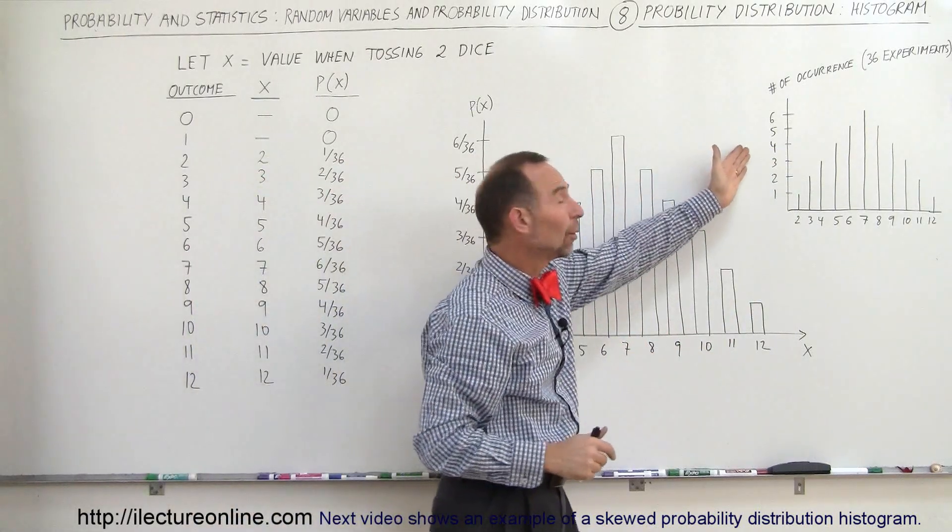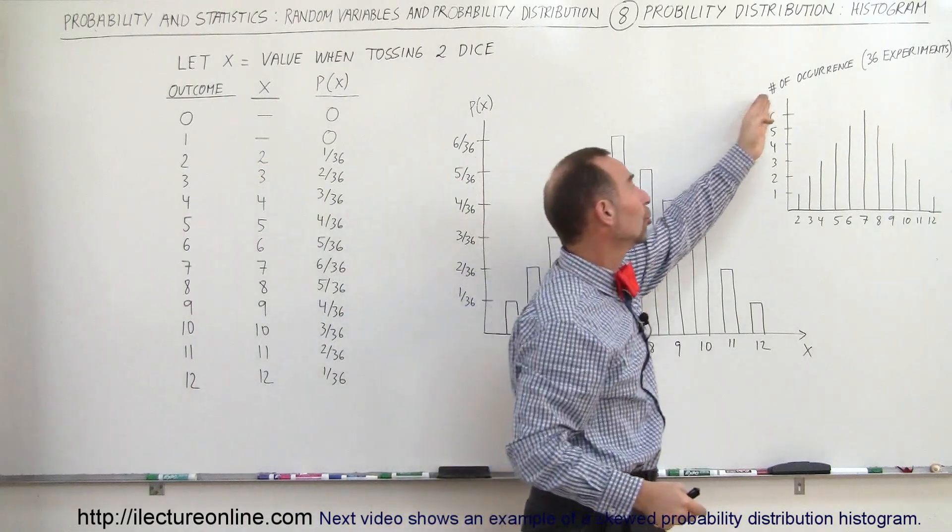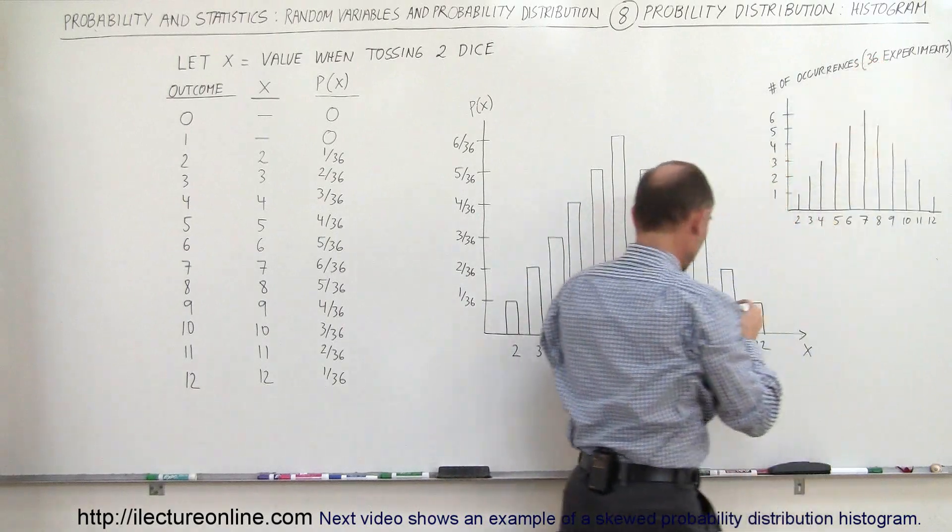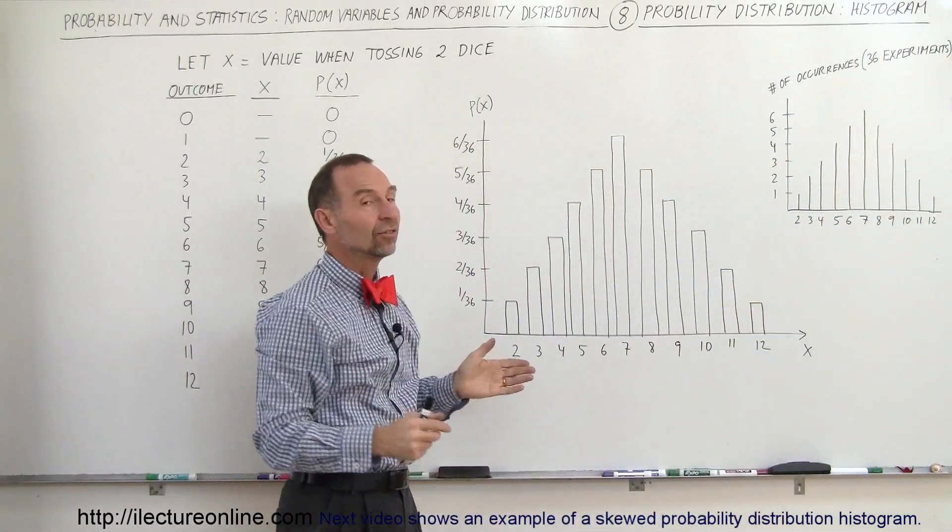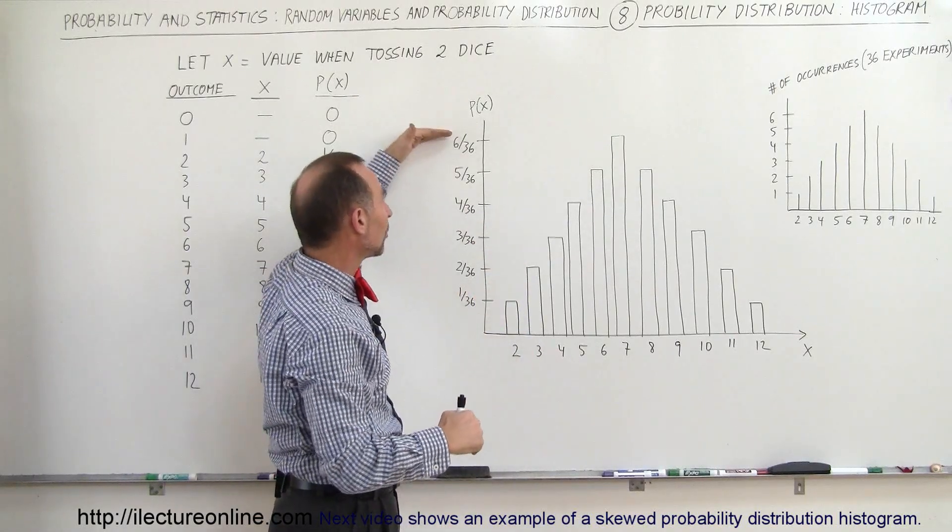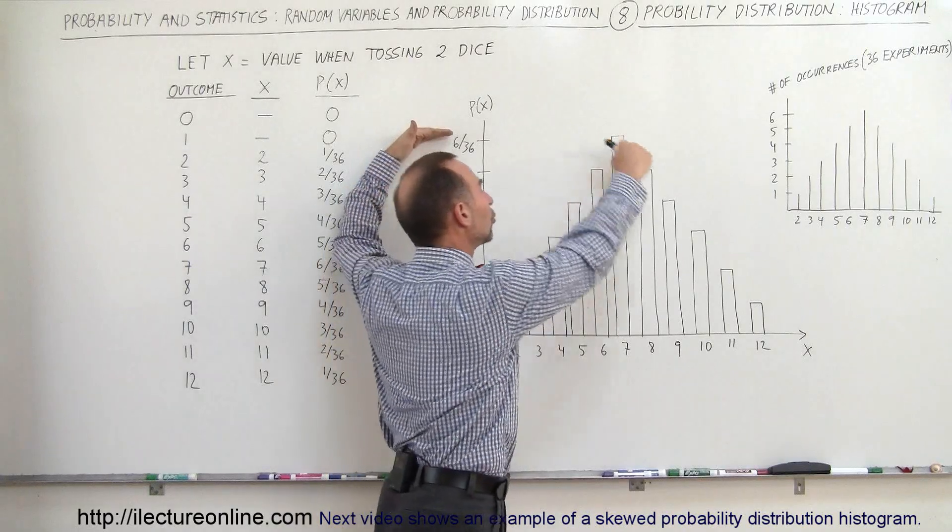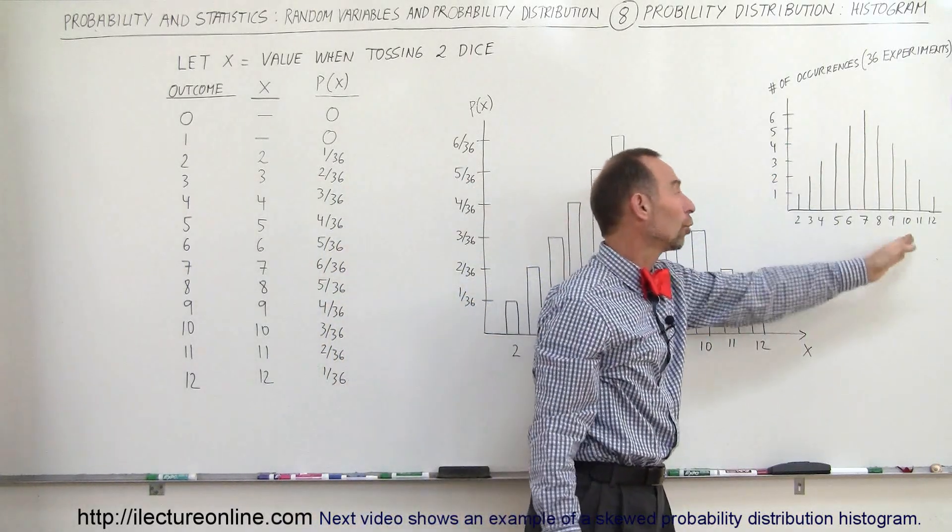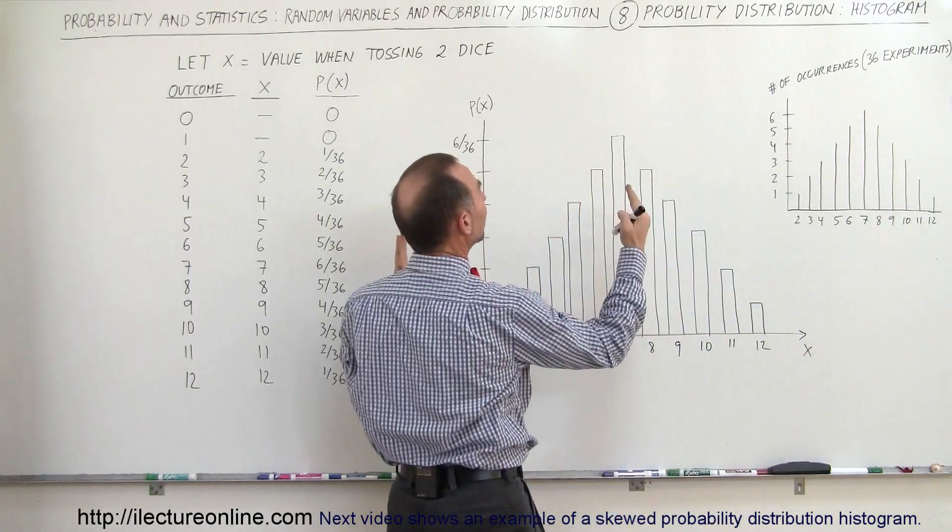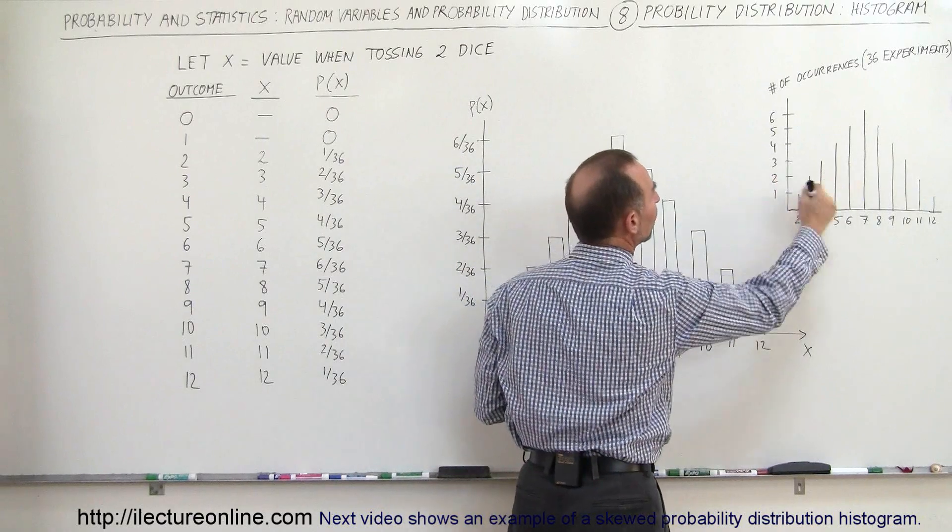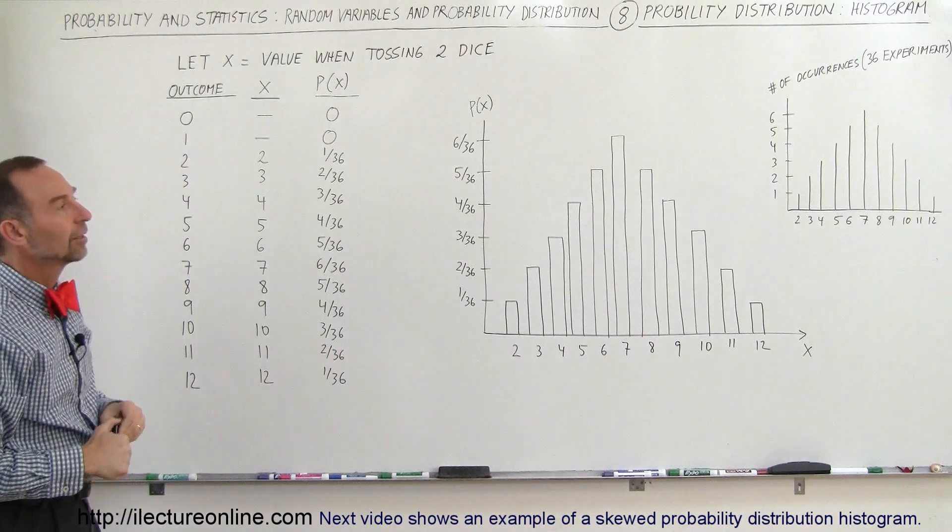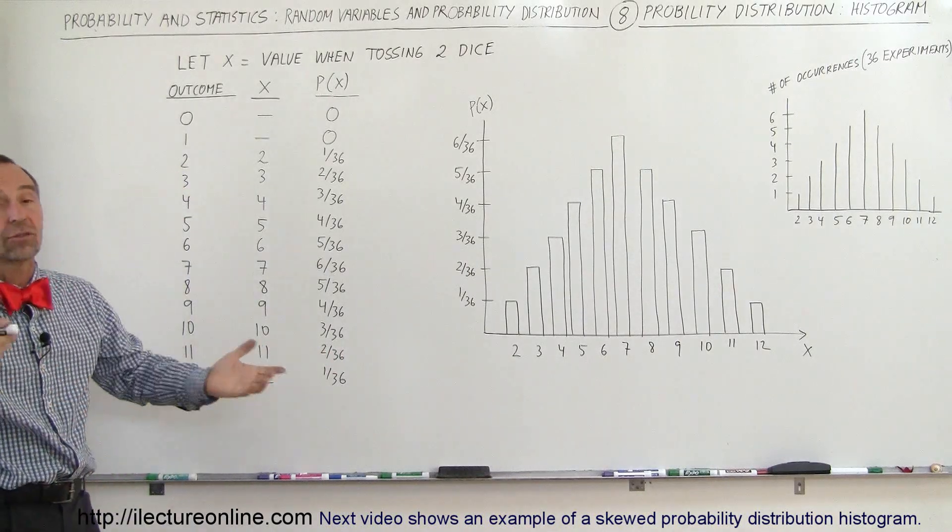So the difference between having what we call a histogram where you show the number of occurrences versus the probability on the vertical axis. The shape is exactly the same, the relative sizes are the same. The only thing is that this is normalized in such a way that when you add up all the totals, you get 1. And here when you add up all the totals, you get the total number of experiments. They're both histograms. This is what we call a probability density distribution. This is simply a histogram showing the number of occurrences as a function of the total number of experiments that you've practiced or that you've done.